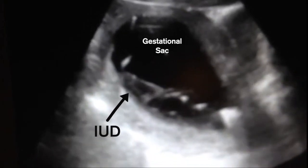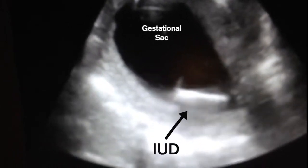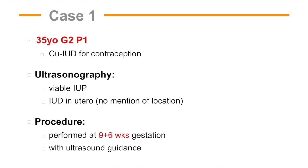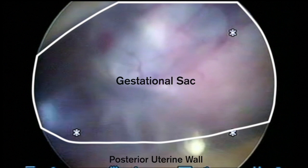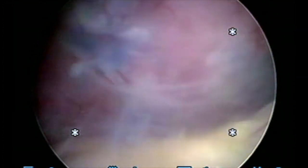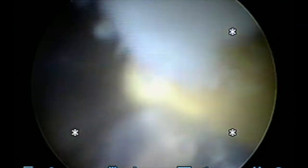Ultrasound guidance can help identify the IUD and facilitate its removal in an uncomplicated fashion. Case 1 is a 35-year-old Gravida 2 Para 1 who had a copper IUD removed at 9 weeks and 6 days under ultrasound guidance. Hysteroscopy is performed without cervical dilation. Upon entering the endometrial cavity, the gestational sac becomes visible. Visualization is challenged by extensive mucus and debris that mixes with the limited infusion of saline distension media. A hysteroscopic grasper can be advanced through the operating channel of the hysteroscope and used as a probe to help identify the IUD.